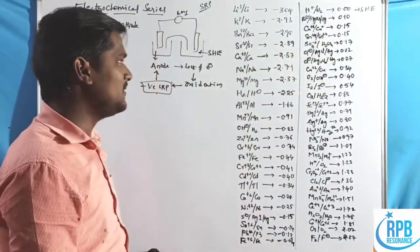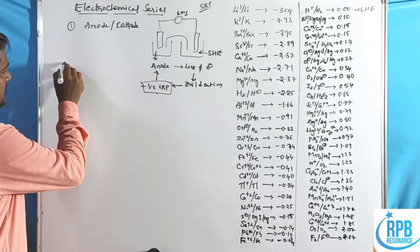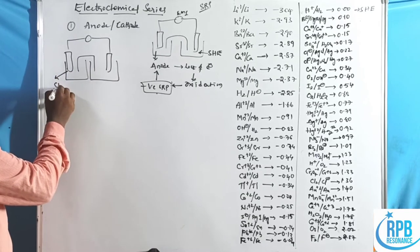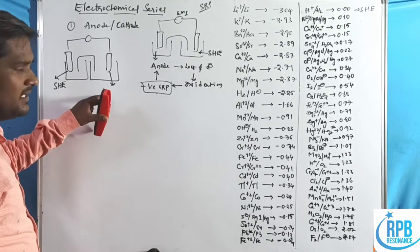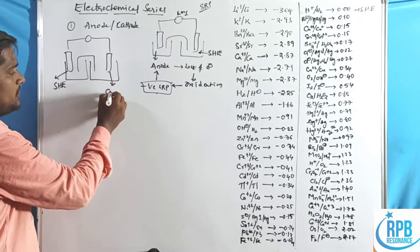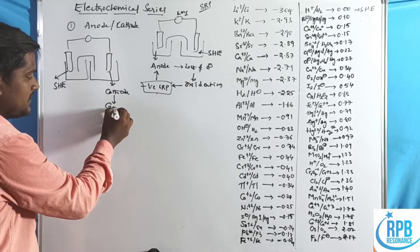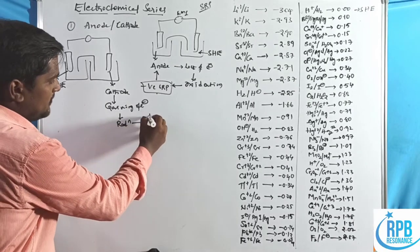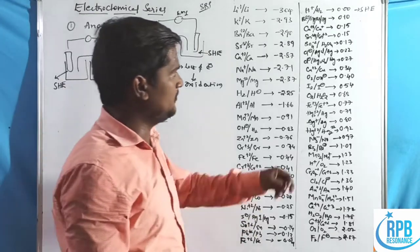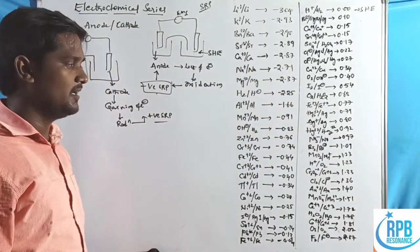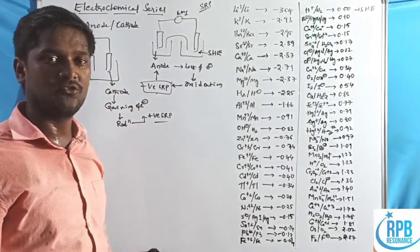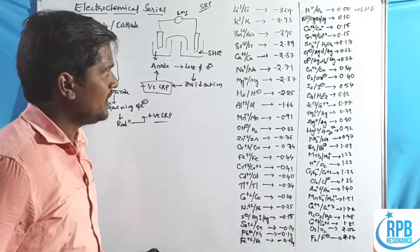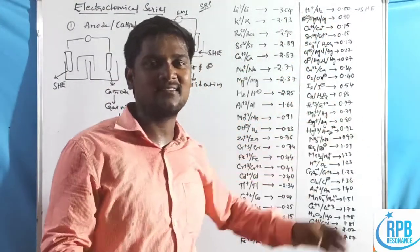Conversely, when the standard hydrogen electrode is placed on the left side, the right-side electrode automatically acts as cathode. At the cathode, gaining of electrons takes place, which is reduction. Metals with positive SRP values — those below hydrogen in the series — act as cathode in the presence of the standard hydrogen electrode.